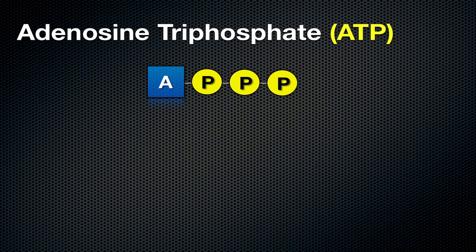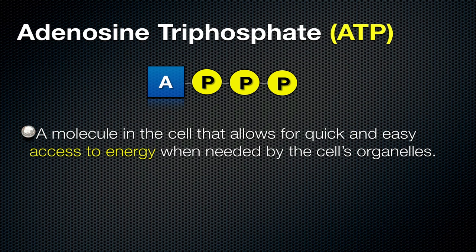Here you can see the A representing adenosine, and you can see three Ps representing three phosphate groups. ATP is a molecule in the cell that allows for quick and easy access to energy when needed by the cell's organelles. In other words, this is the energy currency of the body.